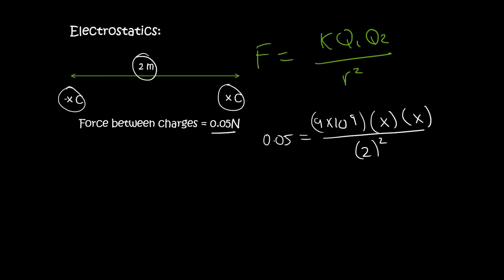So now we know that x times x is just x squared. If you sometimes want to say 2x, don't worry. I've got students who do that. So it's x squared. And now we can take this over to that side. So it's 0.05 multiplied by 2 squared is just 4.